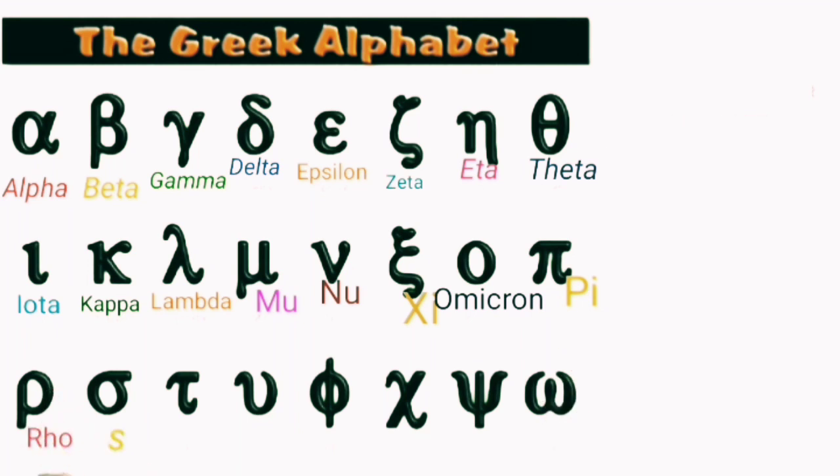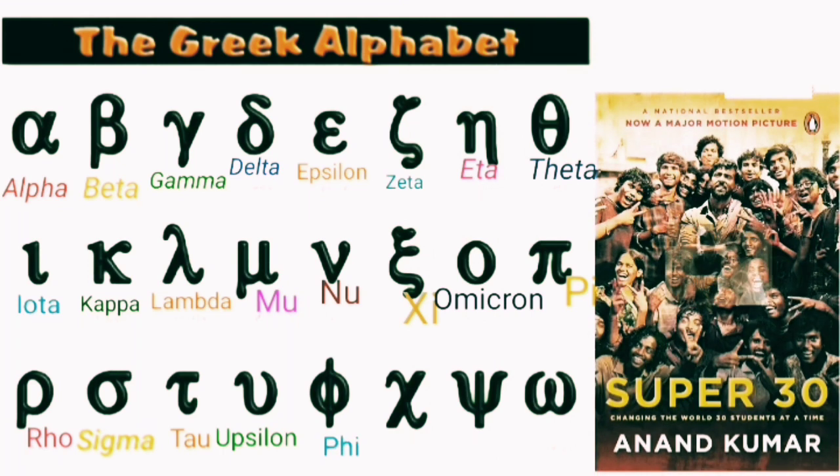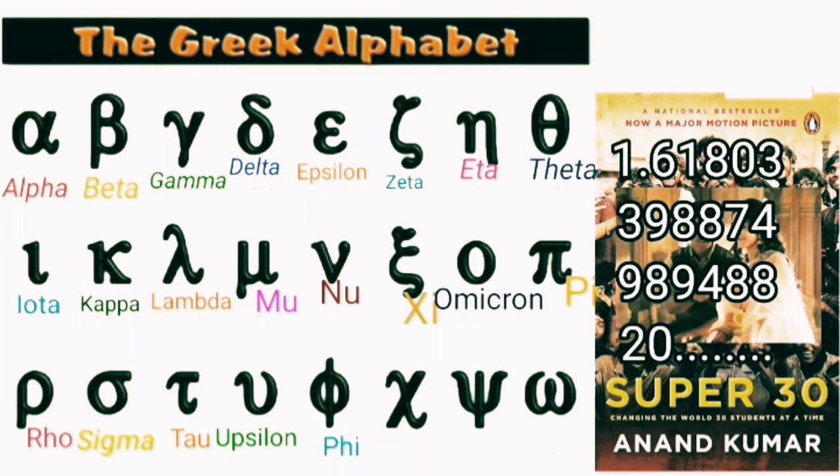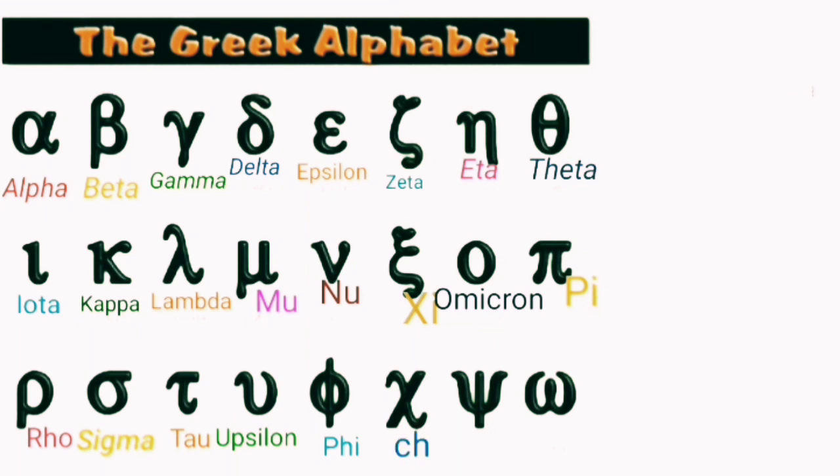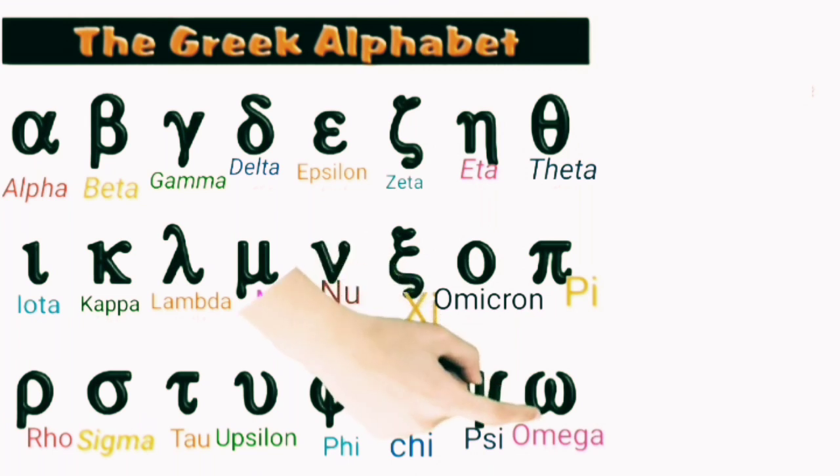This is rho, sigma, tau, upsilon. This is upsilon, not epsilon. This is phi, phi: 1.618, the golden ratio. This is chi, this is psi, and this is the last, omega, to represent ohms in the SI unit of resistance. Now let's read again.